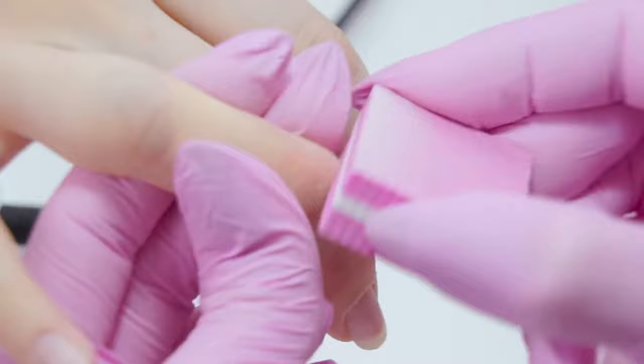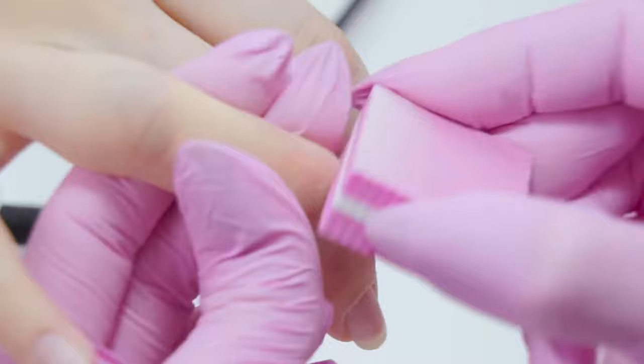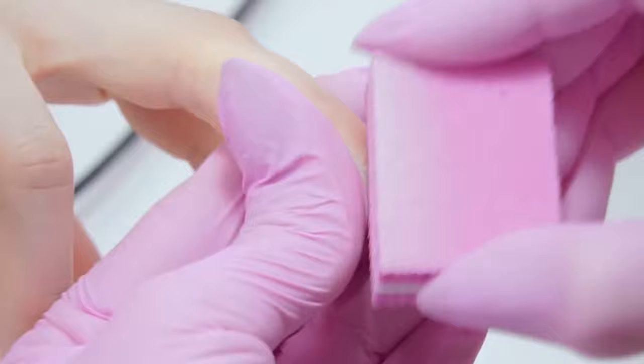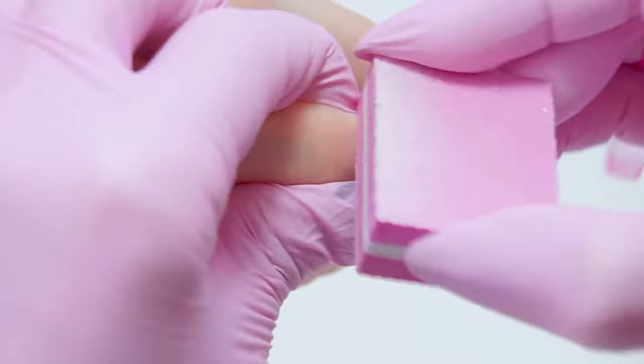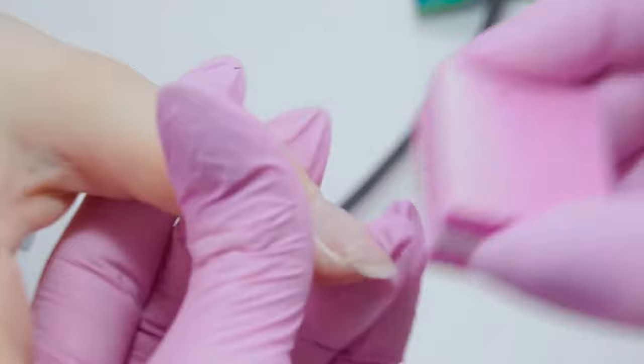Now let's buff the nails in the cuticle area where I have not filed yet. I'm using the soft side of the buff. I avoided buffing the nail plate after removing the gel polish on purpose, since I prefer doing it after lifting the cuticle. While buffing, we also remove some excess skin parts and the manicure time is shorter.